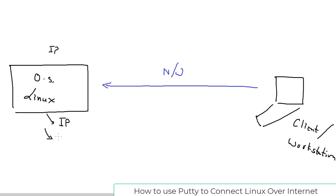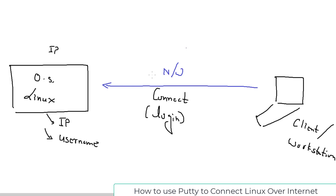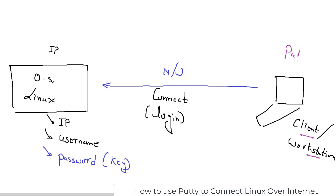The three things you need to connect are: first, the IP address of the system; second, because we want to do a remote login, you need a username; and third, you need to authenticate. Normally that would be a password, but as I mentioned in the last video, instead of a password we have a key that we already downloaded. PuTTY is one of the most commonly used tools to do this remote login.